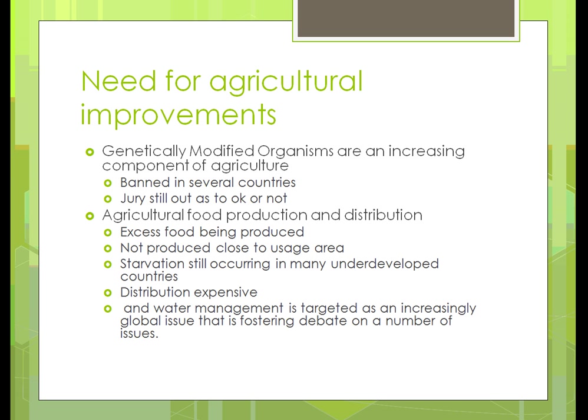One thing that's really important for improving sustainable food production and distribution is that currently we're producing a tremendous amount — the 300 bushels per acre. About 70 percent of the crops grown in the US are exported to other countries, so we're only using 30 percent of the food we produce. And that 30 percent isn't even produced close to where people are using it. Getting production closer to usage areas would use less fossil fuels and be more sustainable.